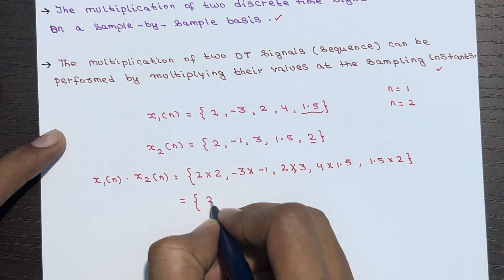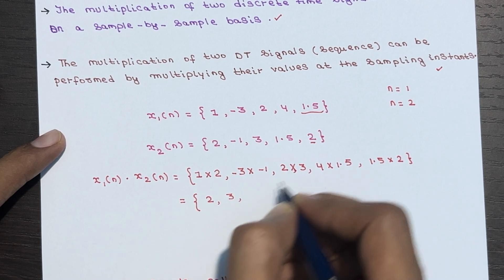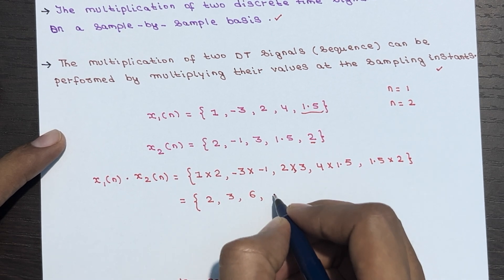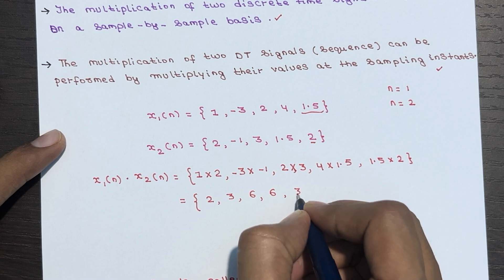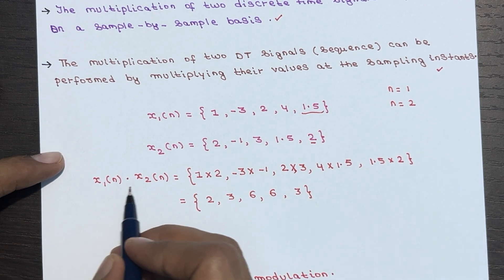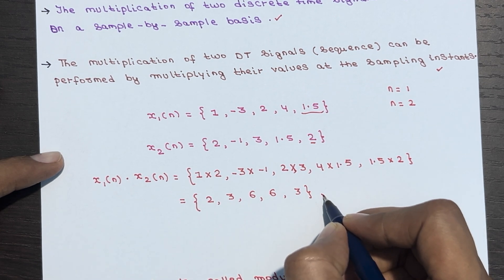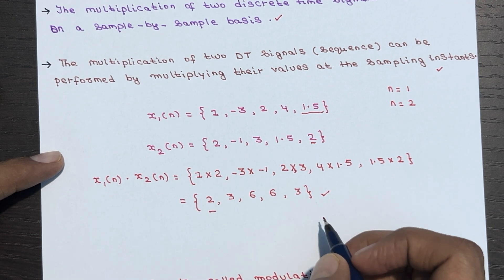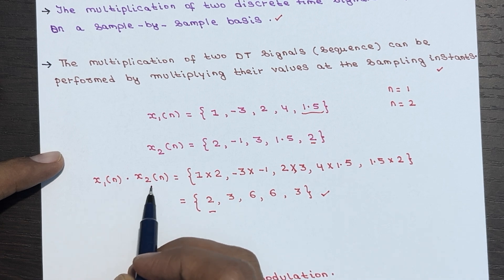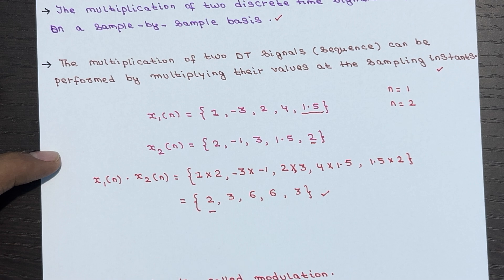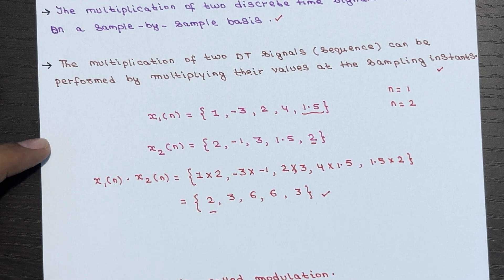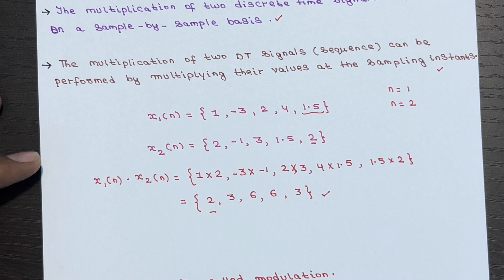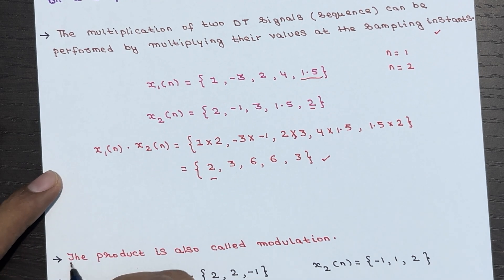The results are: 1×2=2, -3×-1=3, 2×3=6, 4×1.5=6, and 1.5×2=3. So the product X1(n) × X2(n) gives a new signal in sequence form. This is how you perform multiplication of two discrete time signals, sample by sample. Think of this multiplication process as modulation — combining two signals to create a new modified signal.